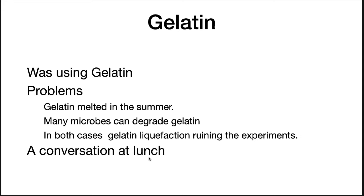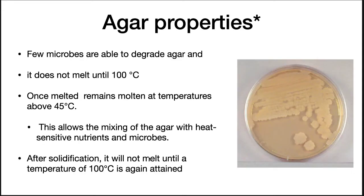One day while eating lunch, the frustrated scientist asked Angelina why her jellies and puddings stayed solid even in the hot summer temperatures. She told him about agar-agar, a heat-resistant jelling agent that she had learned about while growing up in New York from a Dutch neighbor who had immigrated from Java. Development of this new agent led to resounding success. Few microbes are able to degrade agar, it melts at 100 degrees centigrade, yet remains molten at temperatures above 45 degrees centigrade. This allows mixing of agar with heat-sensitive nutrients and microbes. After solidification, it does not melt until 100 degrees centigrade is again reached, facilitating easy cultivation of pathogens. It can be stored for long periods, allowing cultivation of slow-growing microorganisms. Any type of broth can be mixed with agar, giving great flexibility in the kinds of medium that can be made, so many more types of microbes could be cultivated.